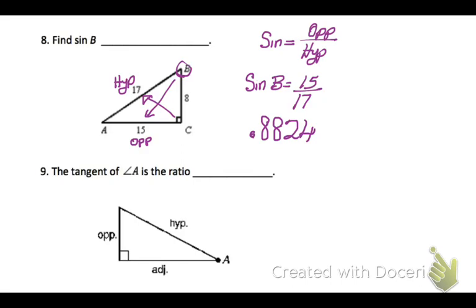The tangent of angle A is the ratio. Well, hopefully you remember tangent is opposite over adjacent.